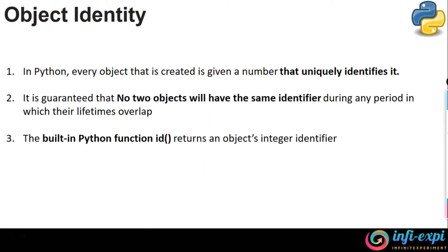There is a built-in function called id() in Python, which will help you to track the identity of a particular object. This id() function is going to return an object's integer identifier. The identifier will be of type integer, and you can track that.